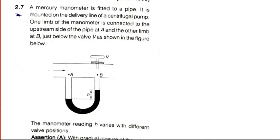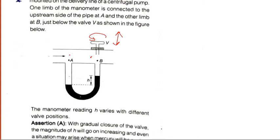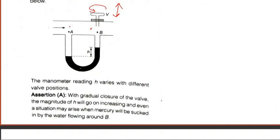Question number 7. A mercury manometer is fitted to a pipe mounted on the delivery line of a centrifugal pump. One limb of the manometer is connected to the upstream side of A. The other limb has a valve. When you rotate this, it will go up or down or restrain the flow. The manometer reading changes with different valve positions. With the gradual closure of the valve, the magnitude of X will go on increasing and even a situation may arise when the mercury will be sucked. Yes, sure.